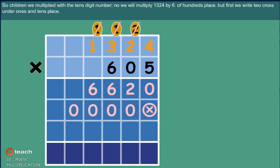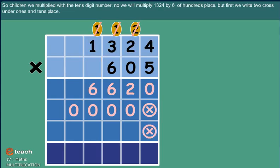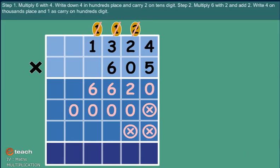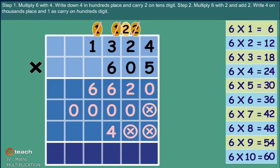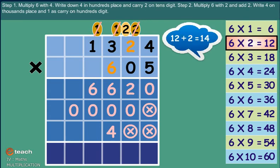Now we will multiply 1324 by six on hundreds place. But first, we write two crosses under ones and tens digits. Step 1: Multiply six with four. Write four in hundreds place and carry two on tens digit. Step 2: Multiply six with two and add two. Write four on thousands place and one as carry on hundreds digit.